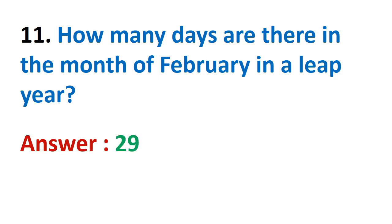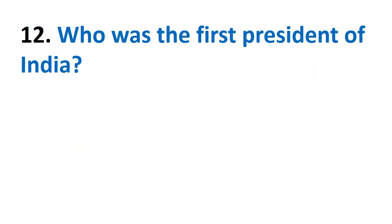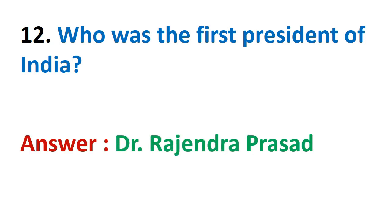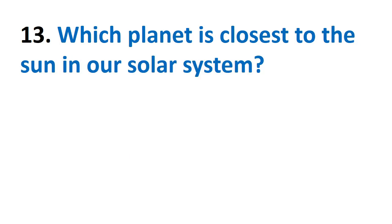How many days are there in the month of February in a leap year? 29. Who was the first president of India? Dr. Rajendra Prasad. Which planet is closest to the sun in our solar system? Mercury.